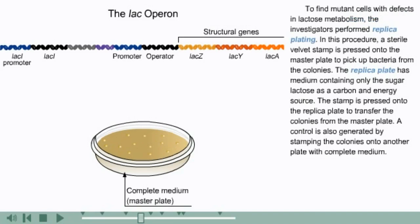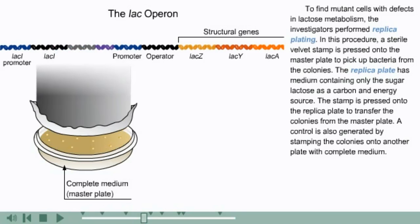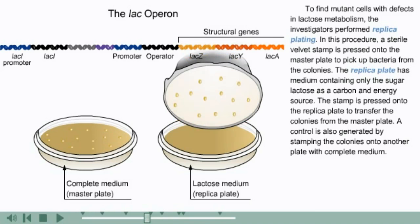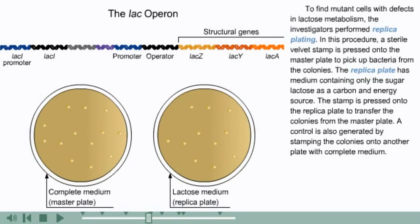To find mutant cells with defects in lactose metabolism, the investigators performed replica plating. In this procedure, a sterile velvet stamp is pressed onto the master plate to pick up bacteria from the colonies. The replica plate has medium containing only the sugar lactose as a carbon and energy source. The stamp is pressed onto the replica plate to transfer the colonies from the master plate. A control is also generated by stamping the colonies onto another plate with complete medium.